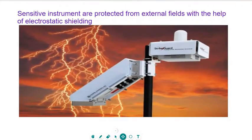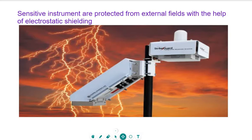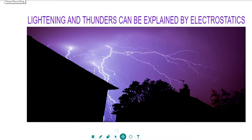Sensitive instruments are protected from external electric fields with the help of electrostatic shielding. Street lamps, cameras, and other electric gadgets are completely safe from thundering or electrical disturbances because they are electrically sealed. Nothing inside this shielded part is harmed. Lightning and thundering can also be explained simply by electrostatics.